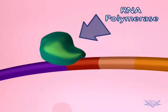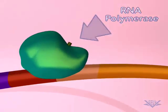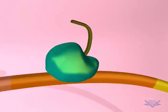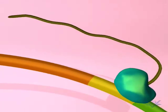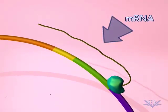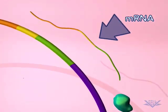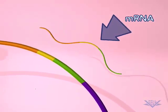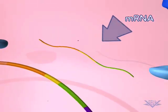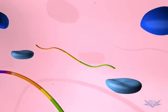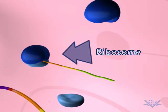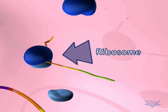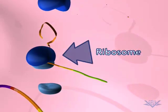At this point, RNA polymerase can begin transcription of the operon. Here we show two of the three lac operon genes being transcribed into mRNA. Ribosomes then bind to the mRNA and the two proteins are translated.